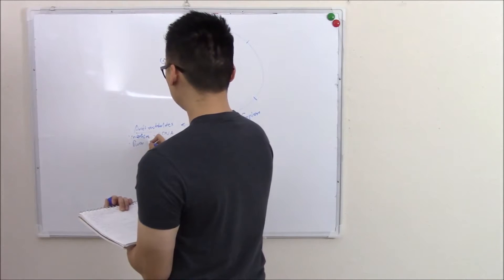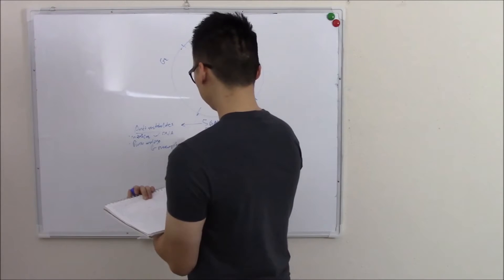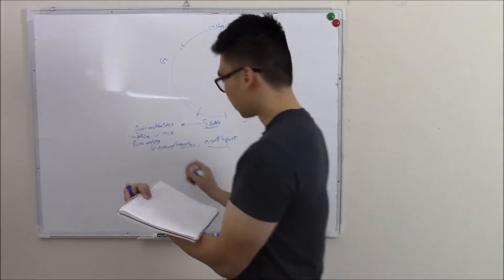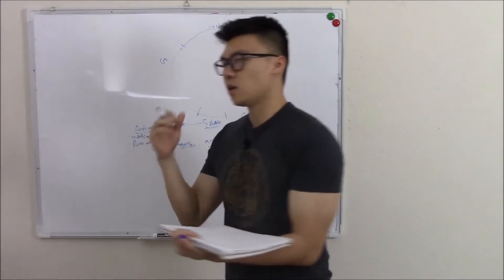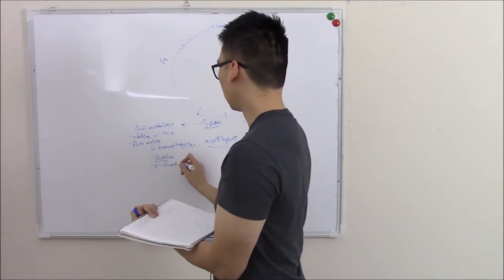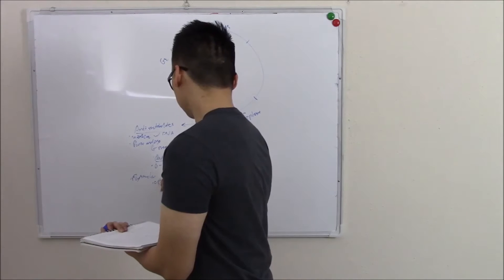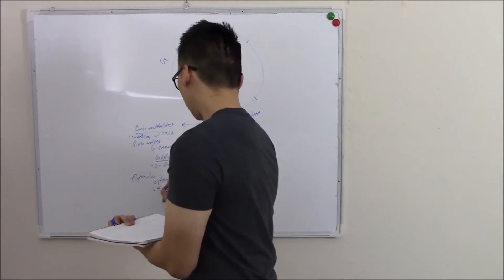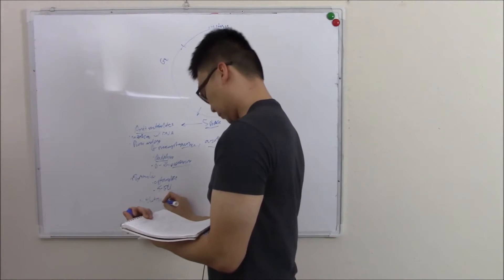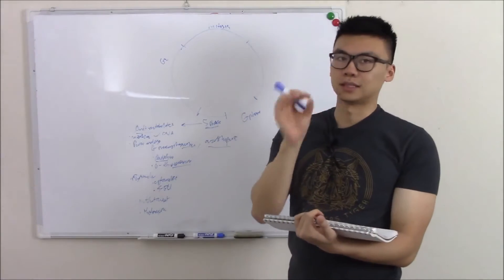Common ones are purine analogs that look like purines and they insert themselves in. These are going to be 6-mercaptopurine, azathioprine, cladribine, and 6-thioguanine. Those are your purine analogs. Most other drugs include your pyrimidine analogs, so cytarabine and 5-fluorouracil or 5-FU. And to round it all off, we have methotrexate and hydroxyurea. That seems like a lot of drugs, but you only need to know one or two facts for each of them.